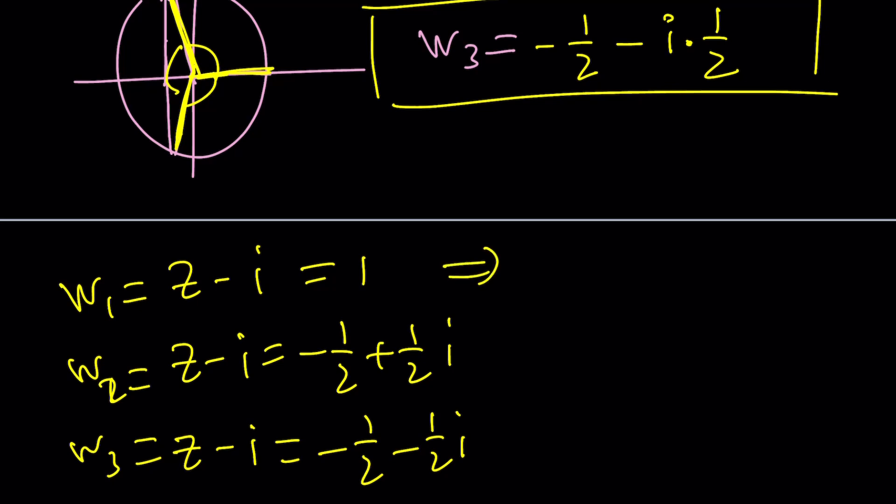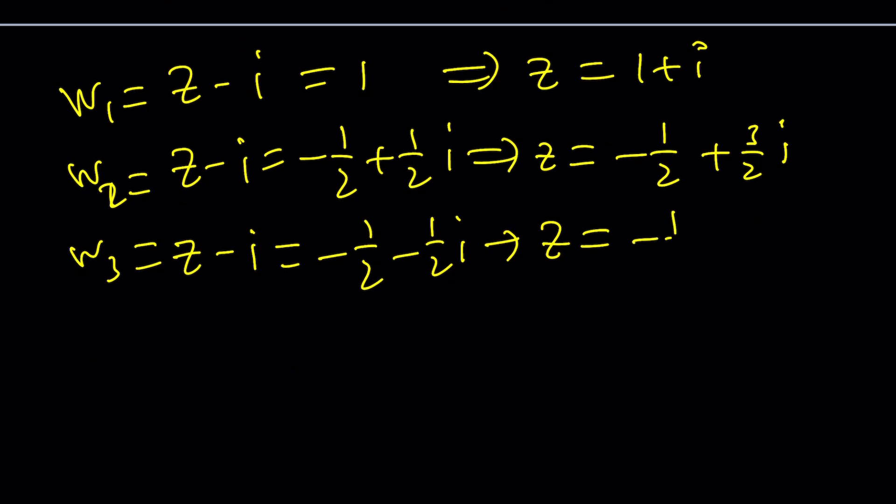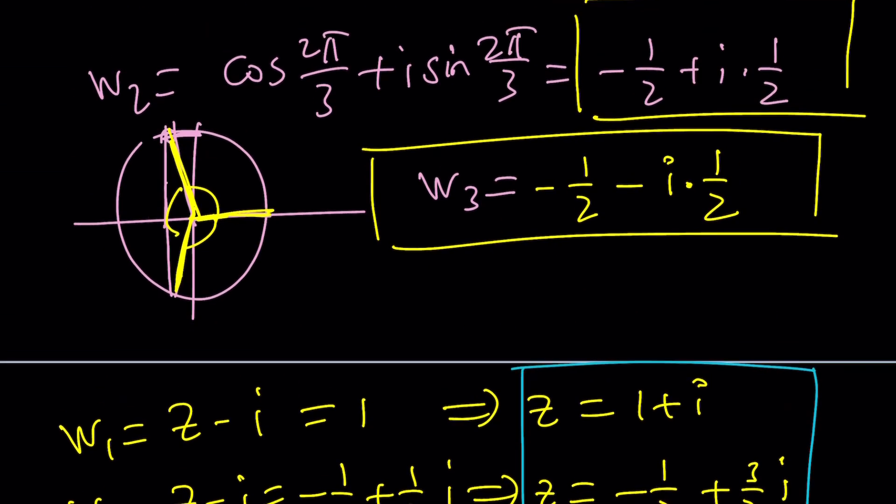And from here, by adding i to both sides, you're going to get Z equals 1 plus i. You're going to get Z equals negative 1 half plus 3 halves i. And Z equals negative 1 half plus 1 half i. So there's going to be three solutions to this equation by finding the cube roots from polar form.